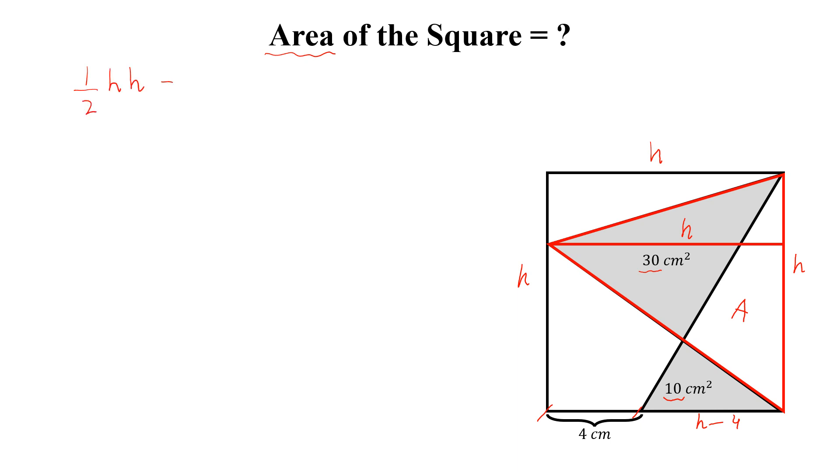And this implies A equal to h square by 2 minus 30.